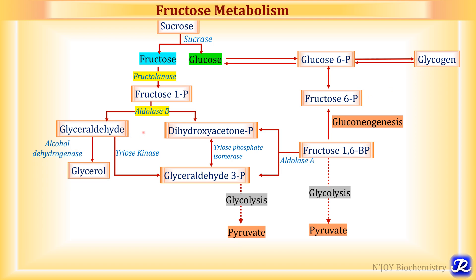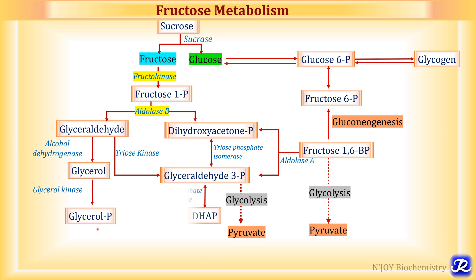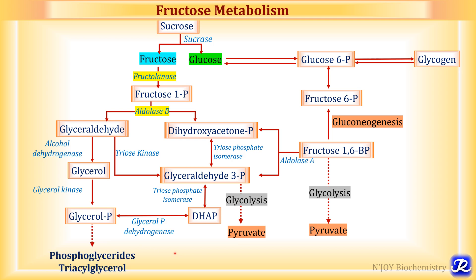The glyceraldehyde formed by aldolase B from fructose 1-phosphate has a different fate. It is converted into glycerol by the enzyme alcohol dehydrogenase. This glycerol can be phosphorylated to glycerol phosphate by glycerol kinase. Glycerol phosphate can also be derived from dihydroxyacetone phosphate — which is formed from glyceraldehyde 3-phosphate by isomerization — and further converted to glycerol phosphate by glycerol phosphate dehydrogenase. Once glycerol phosphate is formed, it is channeled towards formation of phosphoglycerides and triacylglycerol.